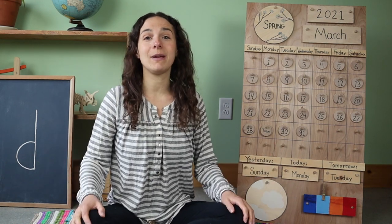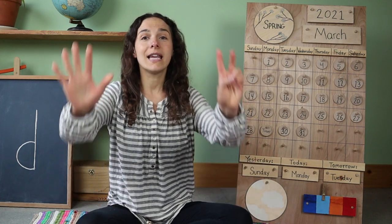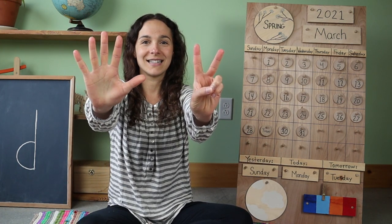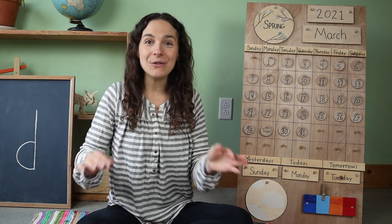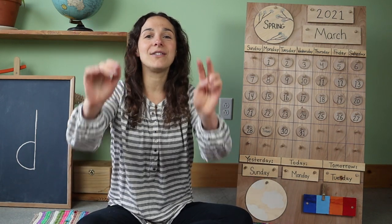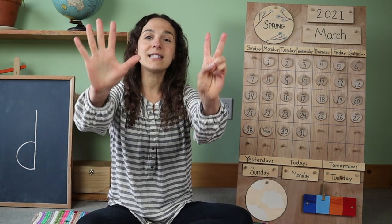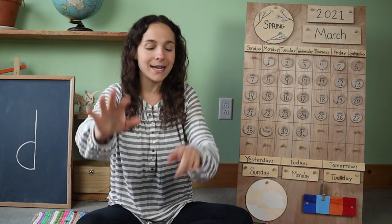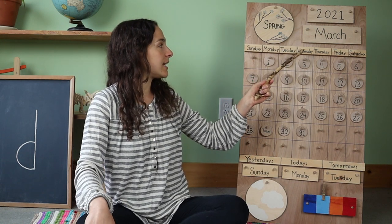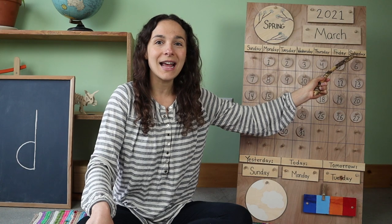Let's sing the days of the week song. And in order to sing this song, can you show me your seven fingers like this? If you know the words, you can sing along with me. There are seven days, there are seven days, there are seven days in a week. Sunday, Monday, Tuesday, Wednesday, Thursday, Friday, Saturday.